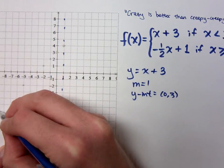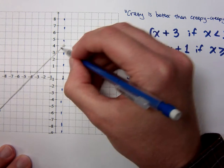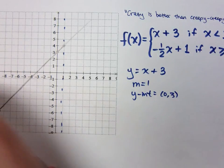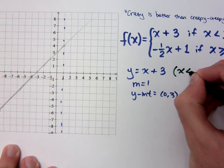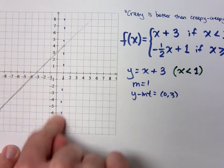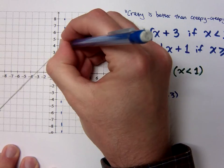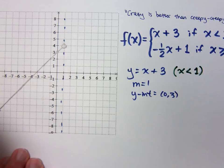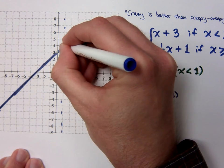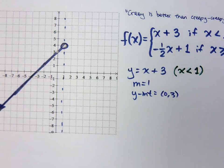If I sketch this out, I have this line. Typically I would keep graphing the whole thing, but I'm not going to because there's a restriction. I want x to be less than 1, which means I keep the stuff on the left side of that line of demarcation. And we have to be careful — at that point we have to do an open circle, because it's not equal to 1. So that's how I graph that piece.